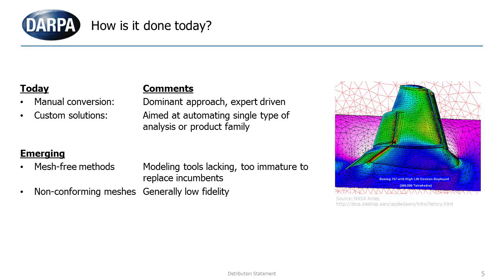The current state-of-the-art still requires an expert-driven manual process or a dedicated process that converts one specific type of part to a very specific type of analysis code — for example, analyzing a wing using computational fluid dynamics codes. There are several other methods emerging, such as mesh-free methods, but they introduce their own set of caveats. For example, mesh-free methods require a different kind of representation that is currently not directly supported by any of the modeling systems that we use.